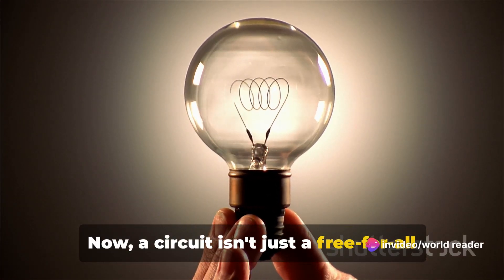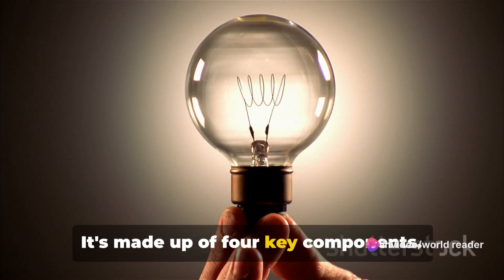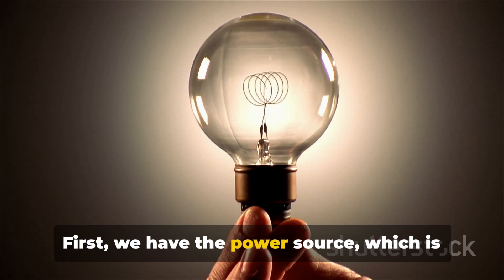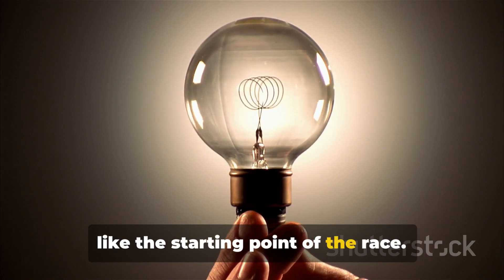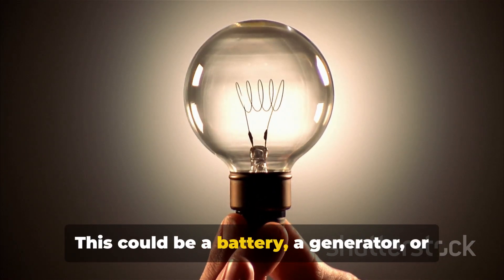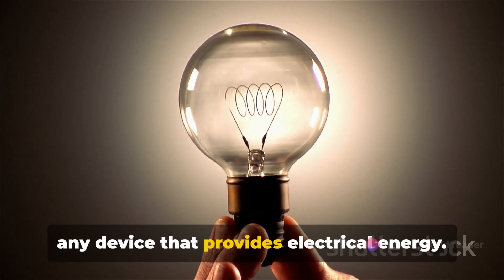Now, a circuit isn't just a free-for-all racetrack, it's made up of four key components. First, we have the power source, which is like the starting point of the race. This could be a battery, a generator, or any device that provides electrical energy.